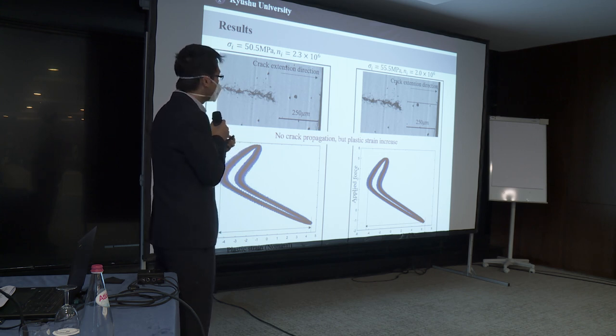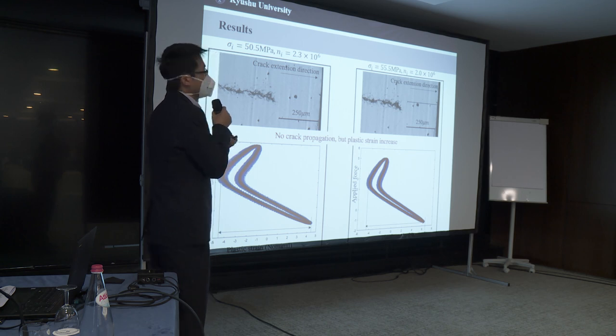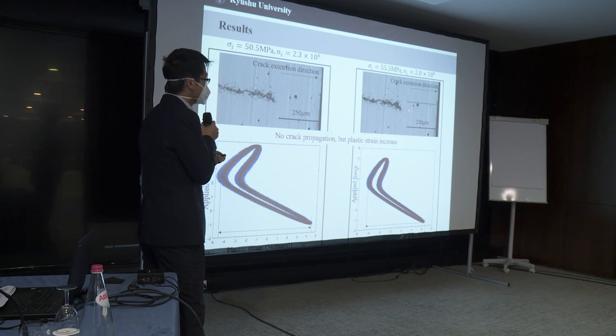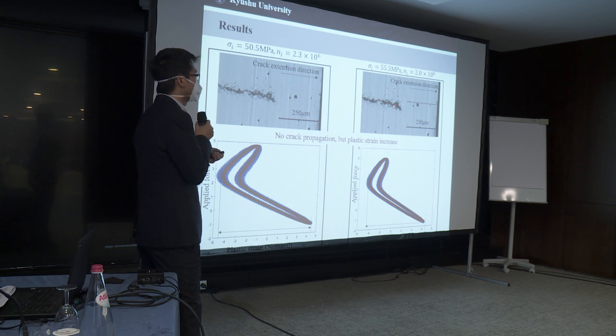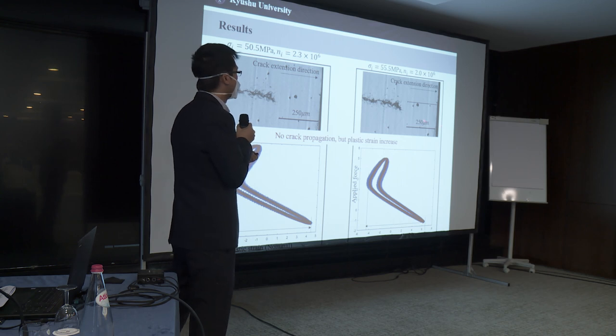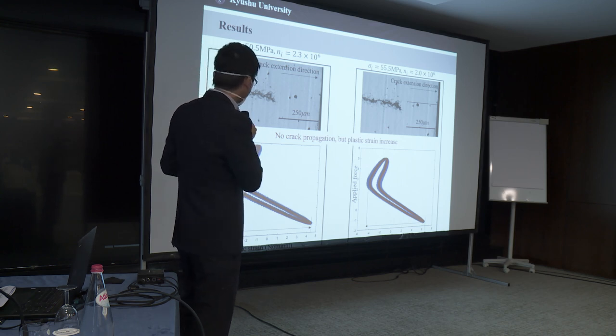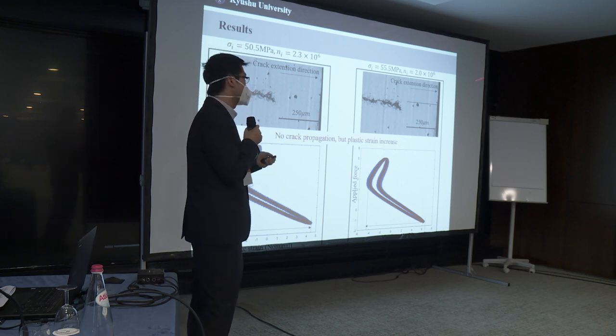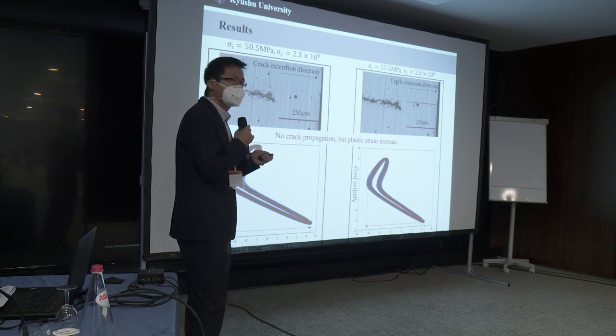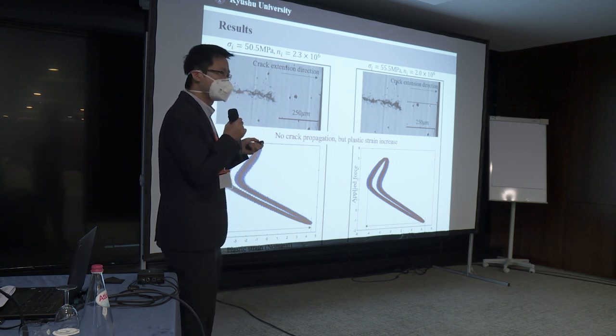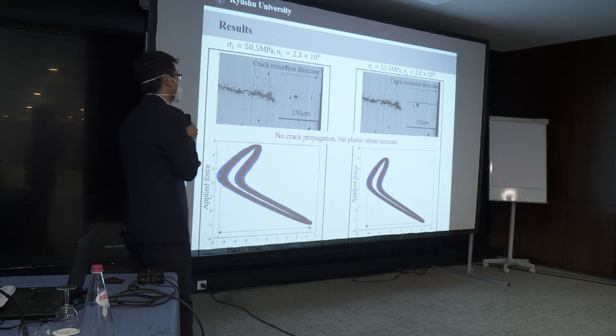And here I want to emphasize that the micro voids or damage or micro cracks initiate ahead of the crack tip, because right now the crack tip is already compressed. So the reason to increase the plastic strain is only at the ahead of the crack tip, there exists some micro voids or micro cracks.